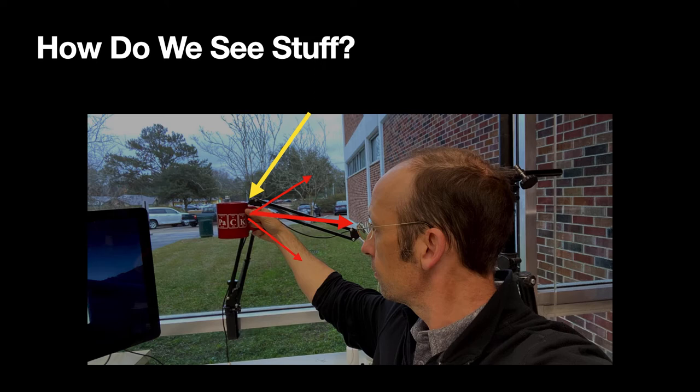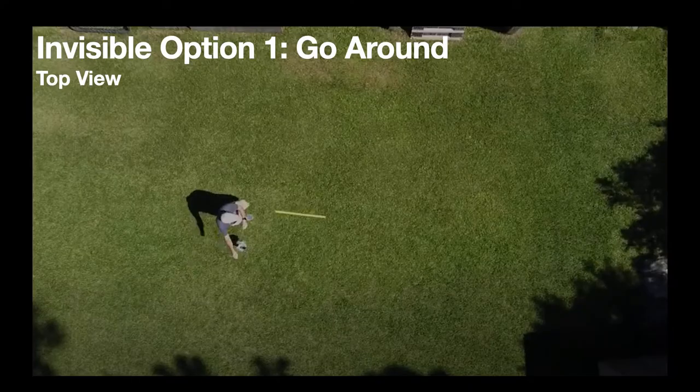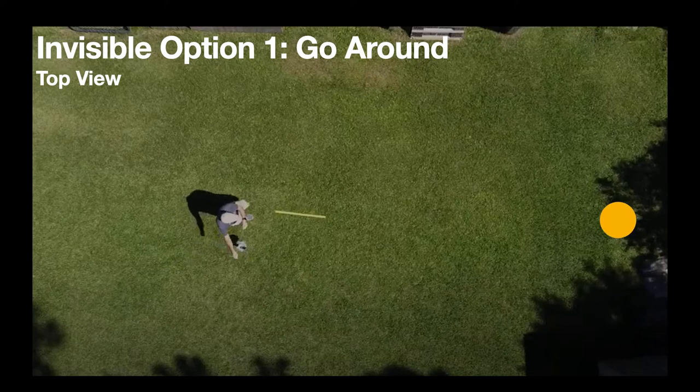So here's how we can make something invisible. There's two ways you can do this. Number one is option one: go around. Here's the top view of me, and suppose I have this background object, this yellow circle. I don't even know what it is. I just drew it.